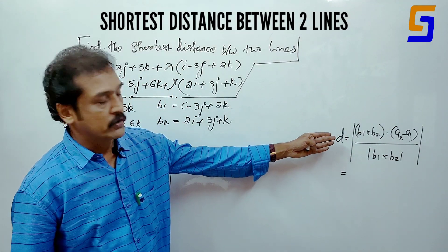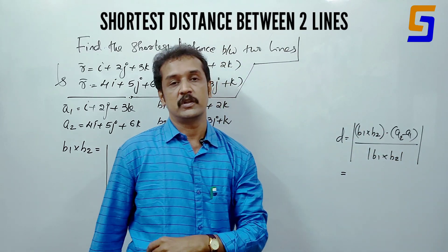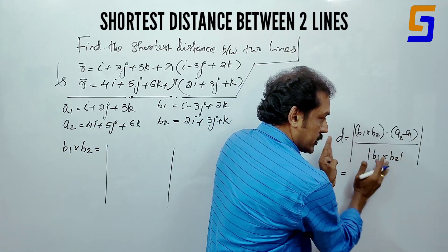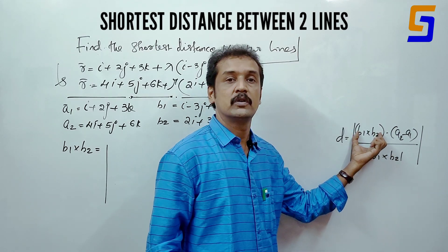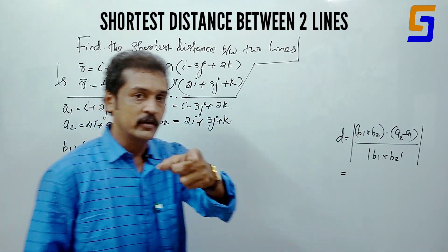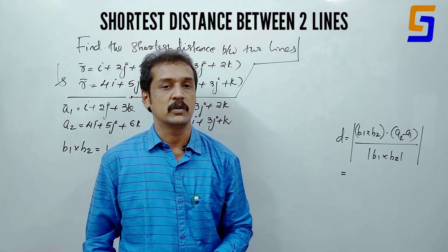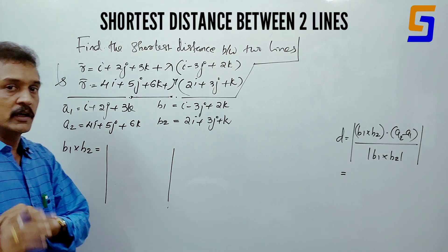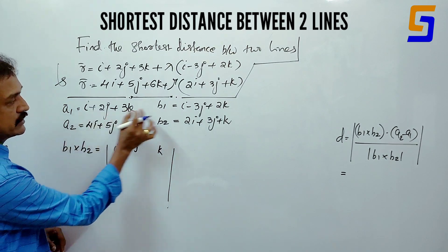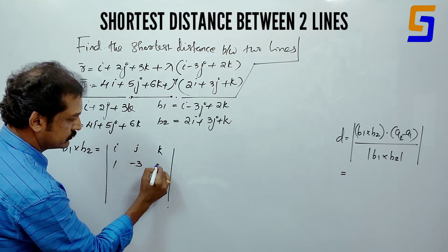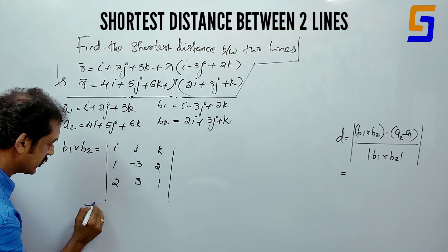The formula for finding the shortest distance is d equals modulus of b1 cross b2 dot (a2 minus a1) divided by modulus of b1 cross b2. Now let's compute b1 cross b2 using the determinant with ijk. B1 coefficients are 1, minus 3, 2.